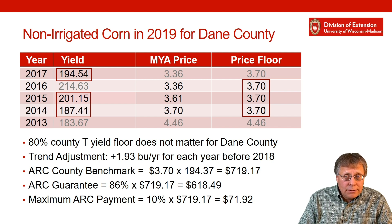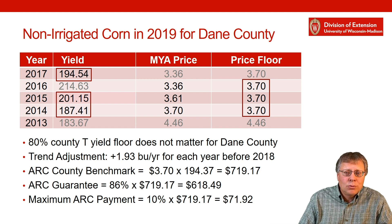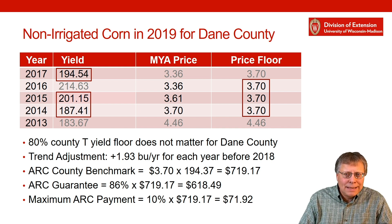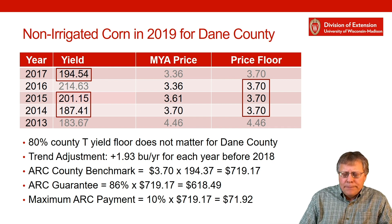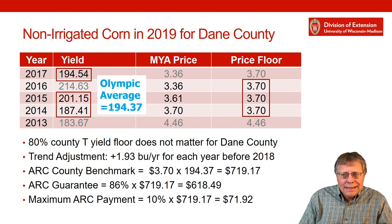Here is a worked example for non-irrigated corn in 2019 in Dane County. The years shown are 2017 through 2013, with county yields for non-irrigated corn starting at 194.54 bushels per acre in 2017 and going down to 183.67 in 2013. The county T yield is very low — well below 183 — so it doesn't matter as a floor in Dane County. The trend adjustment is already included, at 1.93 bushels per year in Dane County for every year before 2018. For the Olympic average, you throw out the high of 214.63 bushels per acre in 2016 and the low of 183.67 in 2013, and take the average of the remaining three, giving an Olympic average yield of 194.37 bushels per acre.